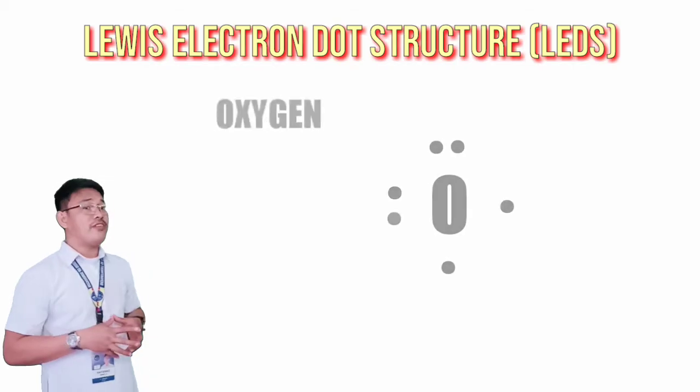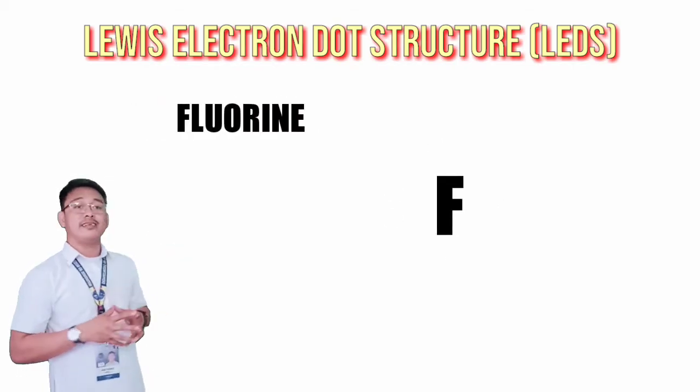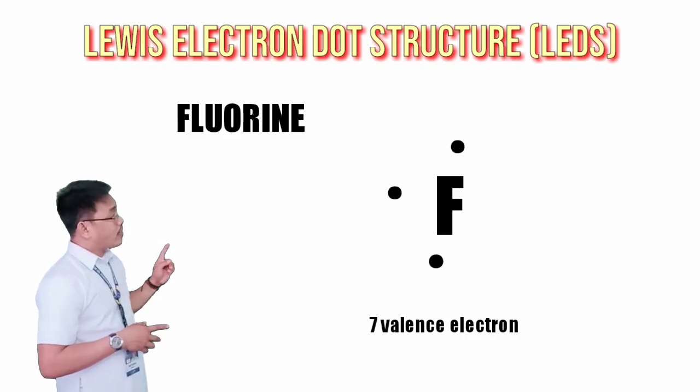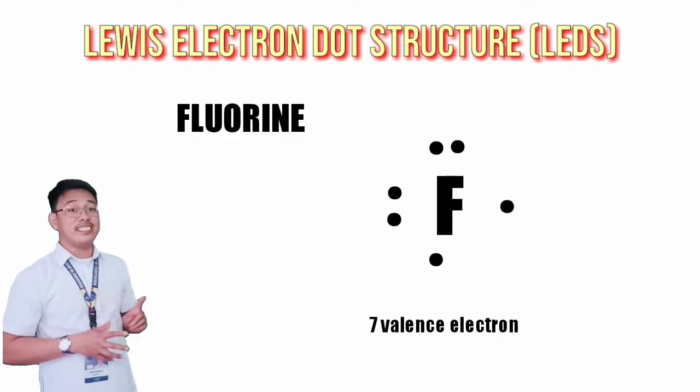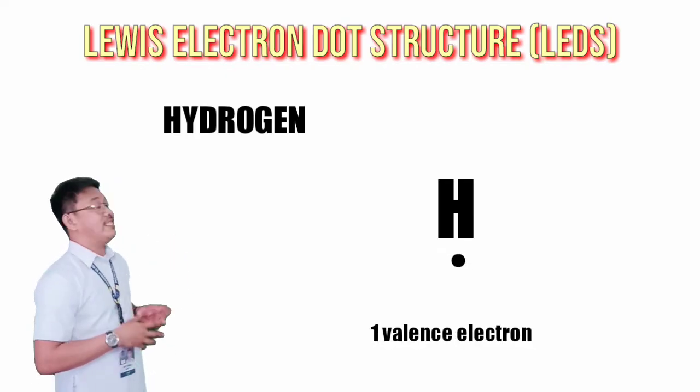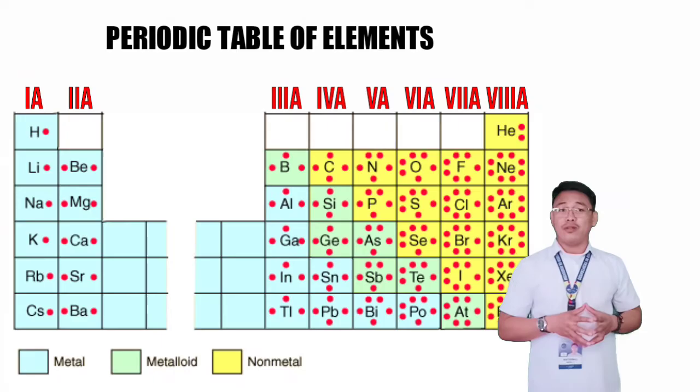The same goes for the other elements like fluorine with seven valence electrons: one, two, three, four, five, six, and seven. Or hydrogen, one dot for one valence electron. Well actually, you can quickly find out how many valence electrons each element has by looking at the periodic table.